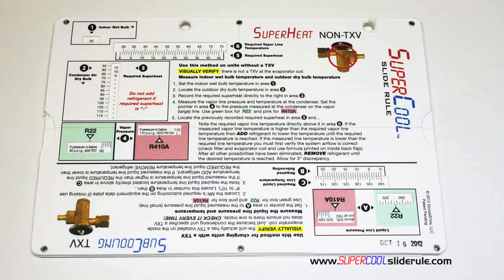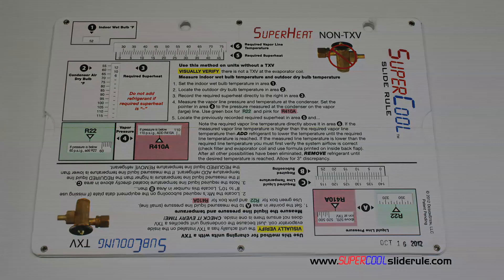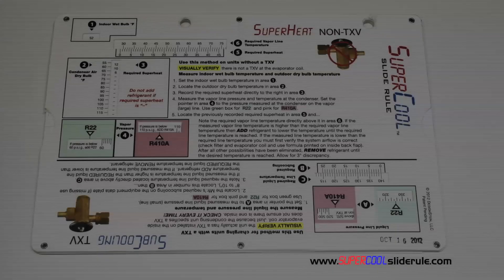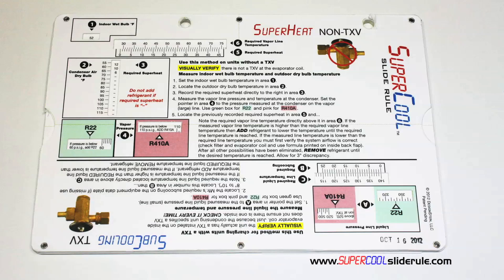I'd like to take a minute to introduce you to the coolest tool in the HVAC industry. Historically, technicians have carried four or five different slide rules — one for R22, one for R410A, one for metal duct sizing, one for flexible duct sizing, and yet others for diagnostics or troubleshooting. Thankfully those days are gone.